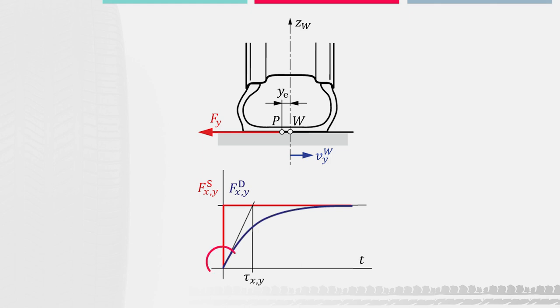As you can see, the slip angle jumps very fast to a certain value. In contrast, the actual force, described by the dynamic tire force in blue, needs some time to build up and reach the steady-state value. This time delay is characterized by the time constant tau.